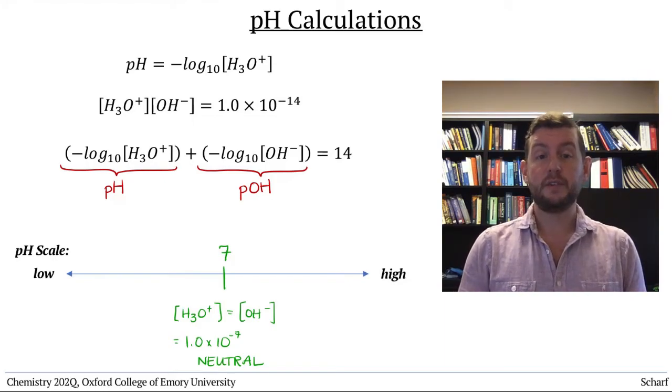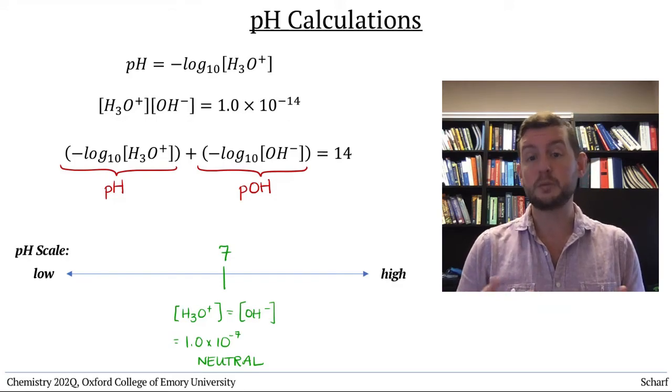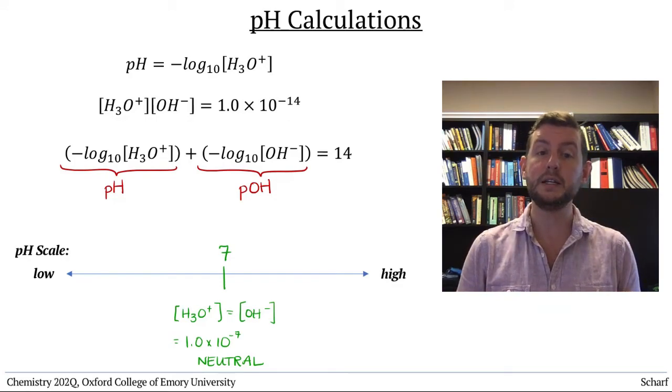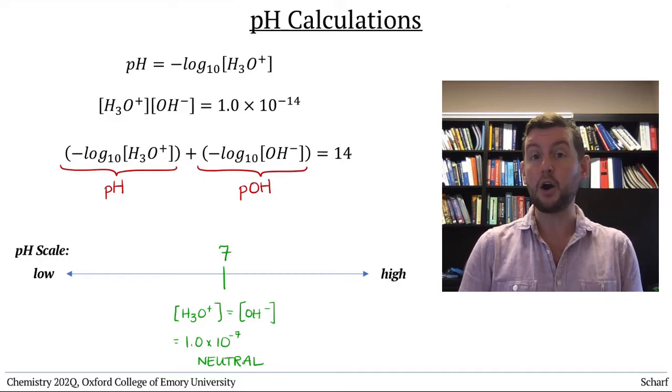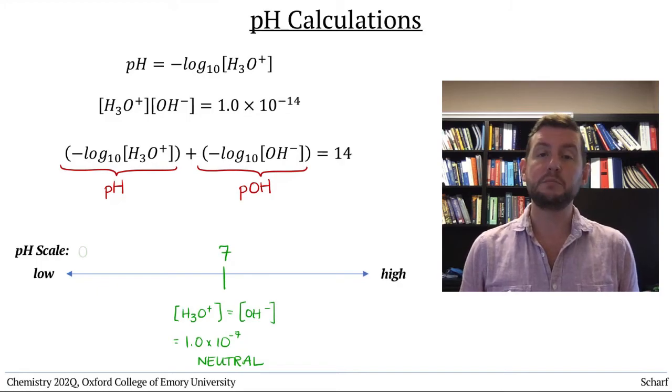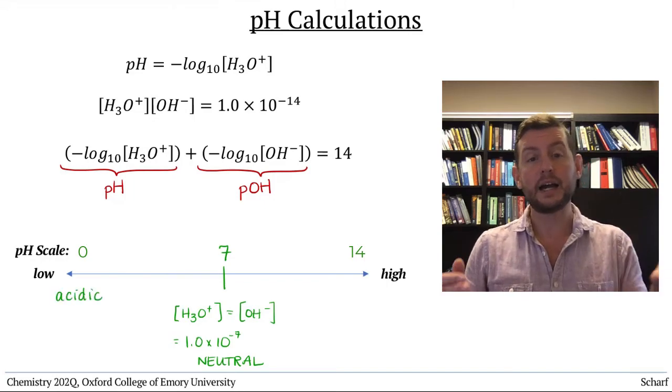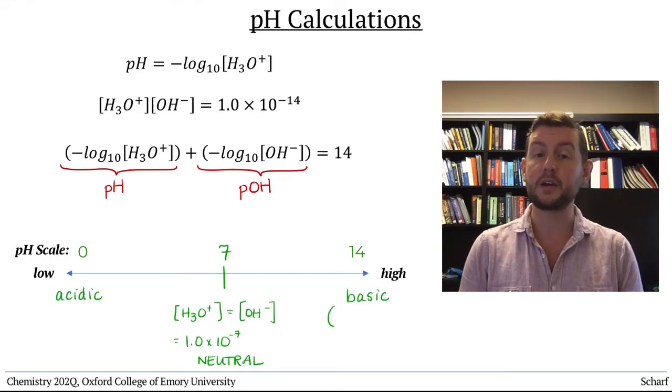The greater the concentration of H3O+, the lower the pH, and correspondingly the smaller the concentration of OH-, therefore the higher the pOH. In common practice, the pH scale goes from about 0 to 14, with low pH solutions being highly acidic and high pH solutions being very basic, or alkaline.